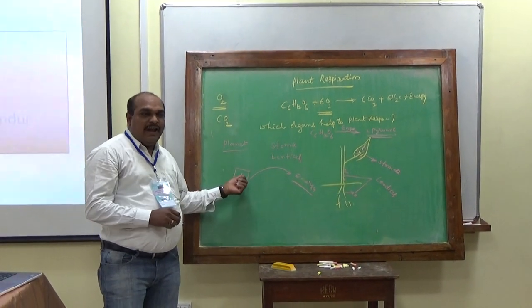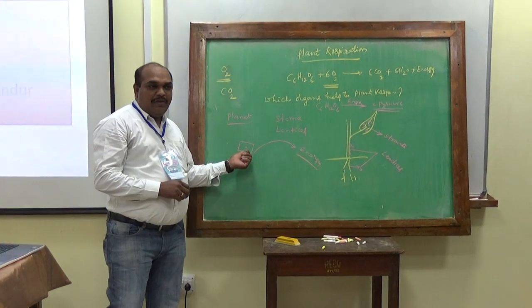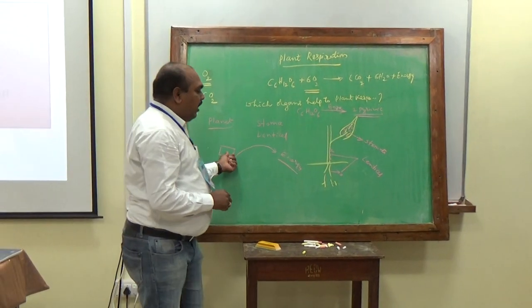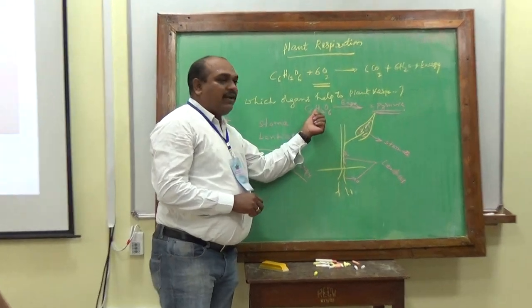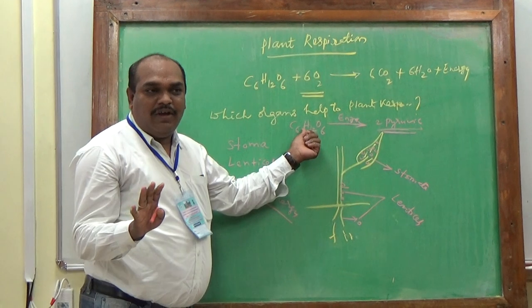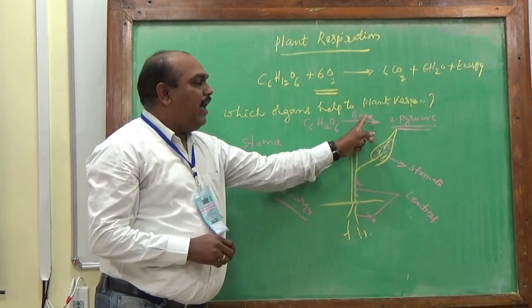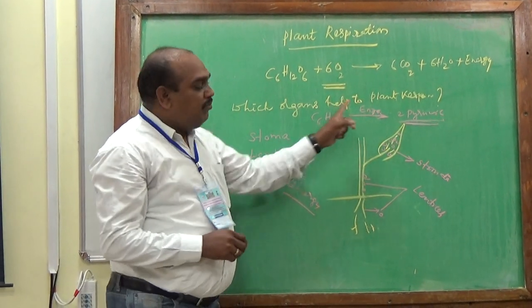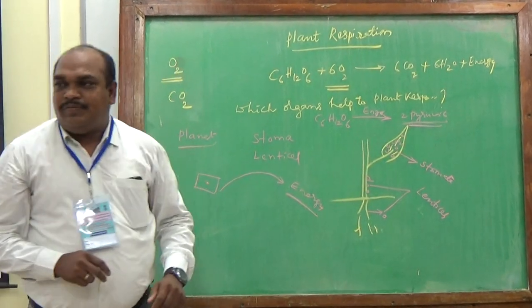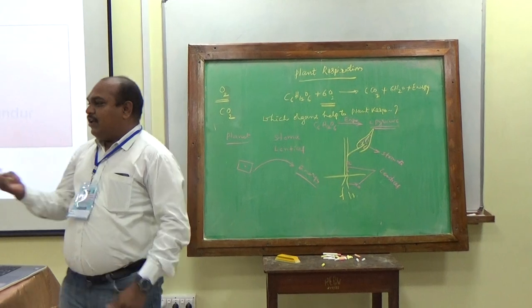So in ancient days, at the initial stage of earth planet, the unicellular organism performed anaerobic respiration. In anaerobic respiration, the oxygen cannot involve. Instead of that oxygen, the enzymes are involved. The enzymes split glucose molecules into two pyruvic acids. Later, the pyruvic acids give energy.